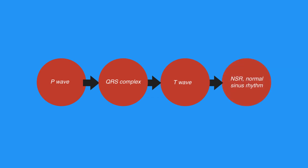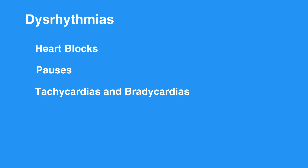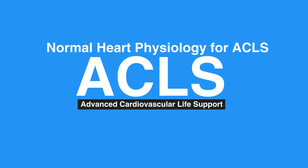Abnormalities in the conduction system can cause delays in the transmission of the electrical impulse and are detected on the ECG. These deviations from normal conduction can result in dysrhythmias, such as heart blocks, pauses, tachycardias, bradycardias, and dropped beats. This concludes our lesson on normal heart physiology for ACLS.